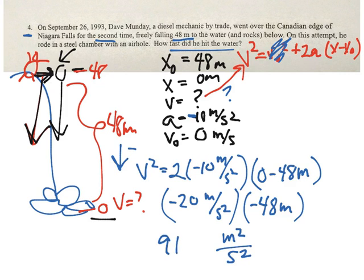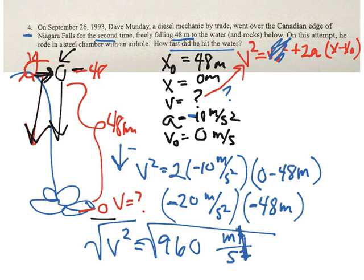You can use problem two, which is v² equals v₀² plus 2a times x minus x₀. We don't know v². V₀ is zero, so that term goes away. Acceleration is negative 10 meters per second squared. Change of position is 0 minus 48. 2 times negative 10 gives negative 20. Zero minus 48 is negative 48. Negative 20 times negative 48, double negative gives positive 960 equals v².